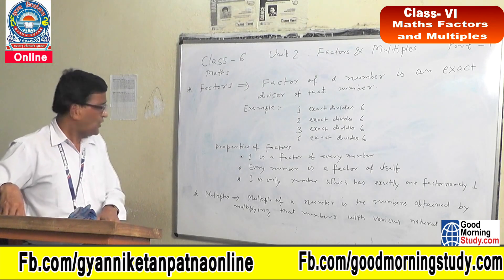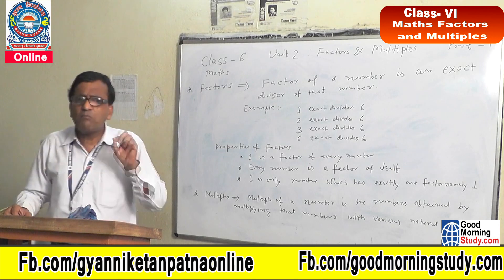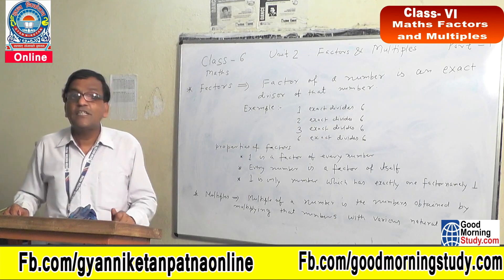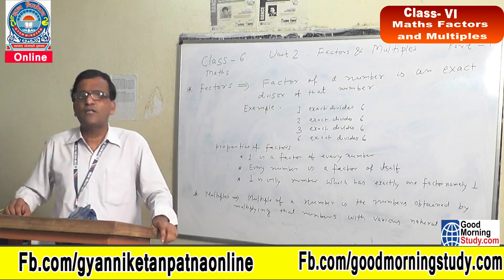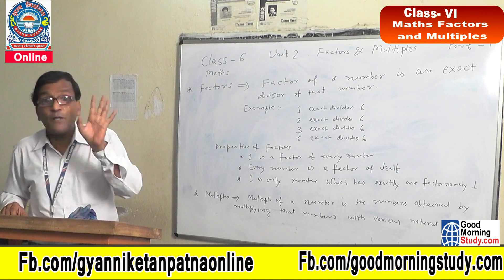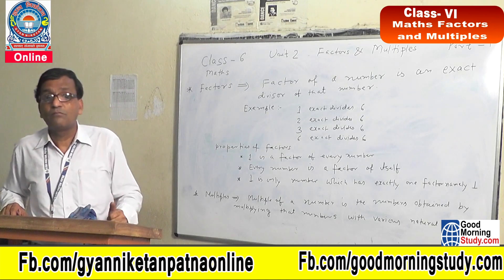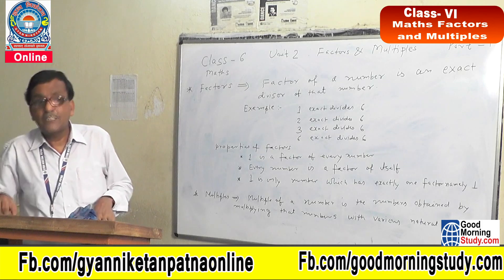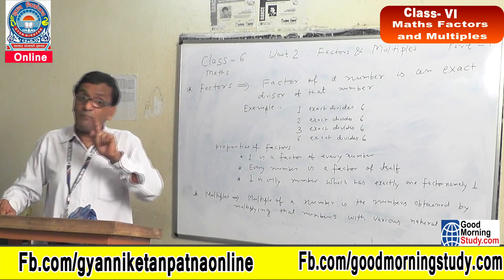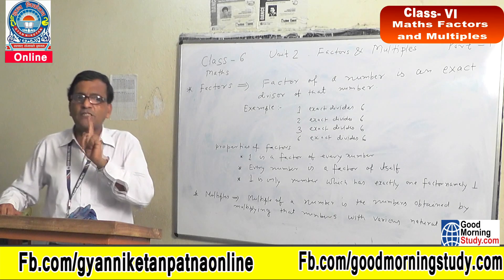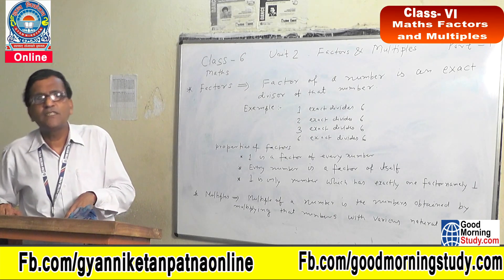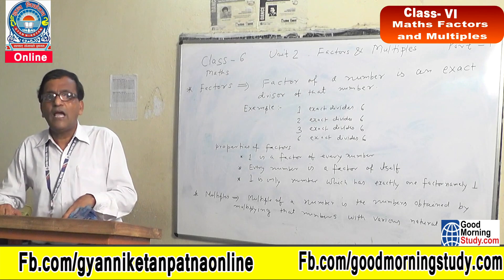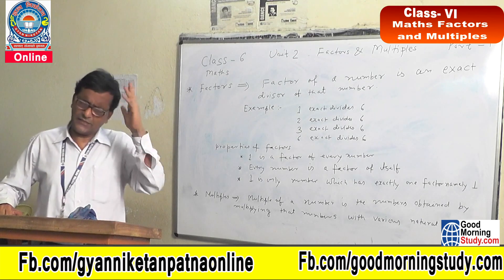Now, some properties of multiples. First, a number is a multiple of itself. Second, multiples are infinite — we cannot count all the multiples of any number. Multiples of a number are not countable; they are infinite. This is a main difference between factors and multiples: factors of a number are countable, but multiples of a number are not countable — we can find limitless multiples of any number.